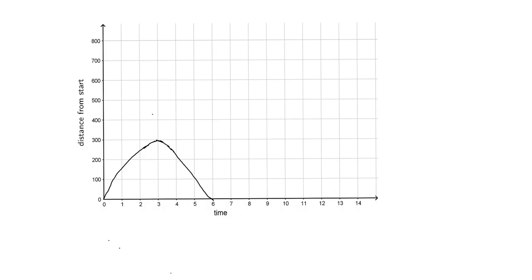Let's read what this graph is telling us. Right at the beginning we're at the start; after a minute we're roughly about 150 meters from the start, and then we carry on moving further and further away from the start point. All this going up is telling us that we are moving further and further away from the start point. Then round about here we're 300 meters away from the start point, and then we start coming back towards the start: 200 meters, then 100 meters, then back at the starting point. So although this looks like a hill, that's not what it's telling us.